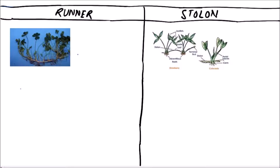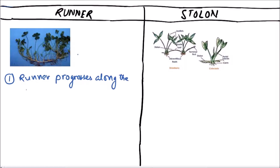Welcome to Studio Biology. In this video we are going to discuss the differences between runner and stolon. Runner and stolon are sub-aerial modifications of the stem. In a runner, the runner progresses along the ground straight and horizontal.